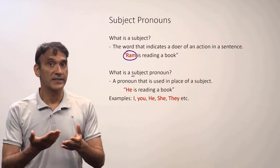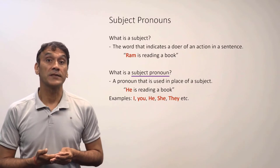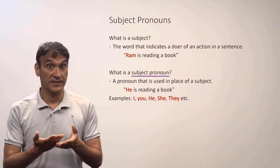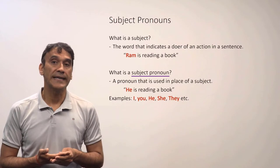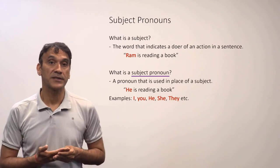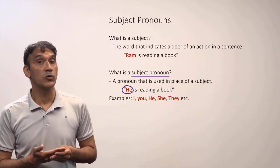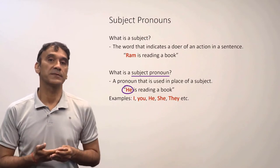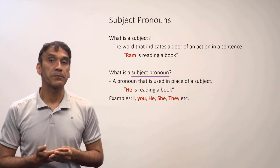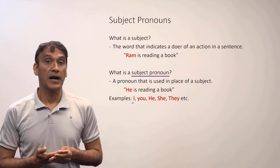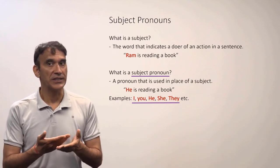A pronoun used in place of the subject is a subject pronoun. In the sentence 'He is reading a book,' 'he' is replacing the subject from the previous sentence — 'he' is replacing the noun Ram. So 'he' is the subject pronoun. Other examples of subject pronouns in English are: I, you, he, she, they, etc.